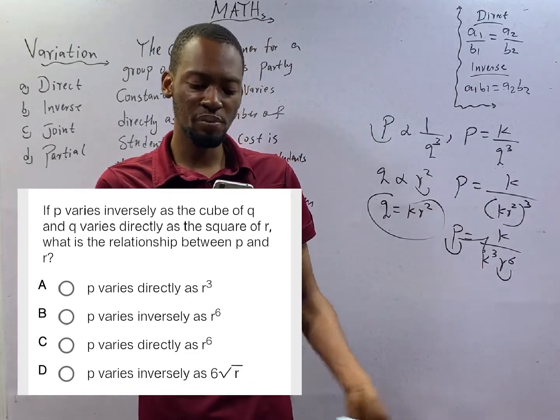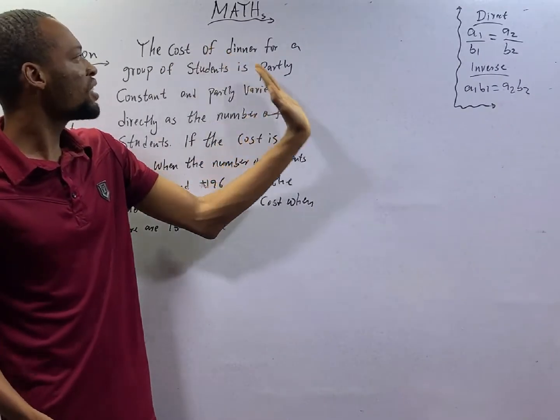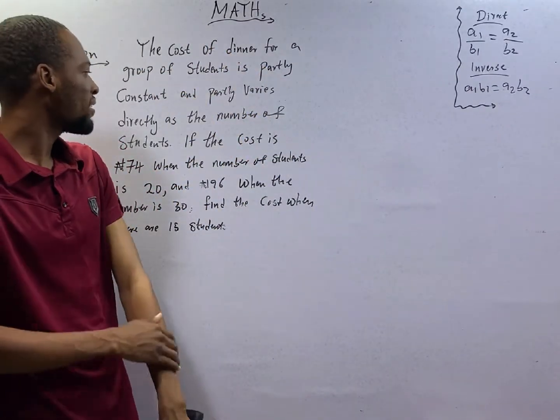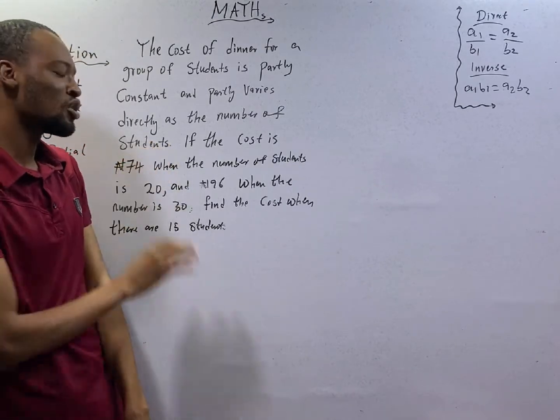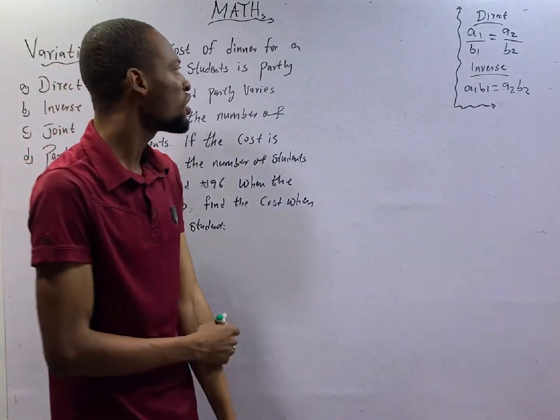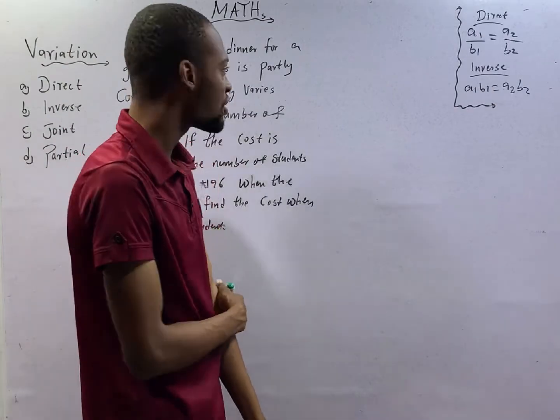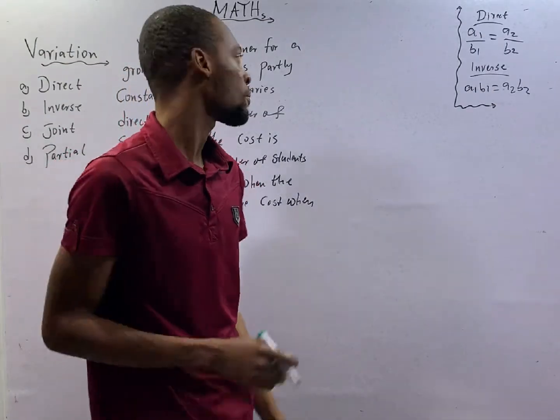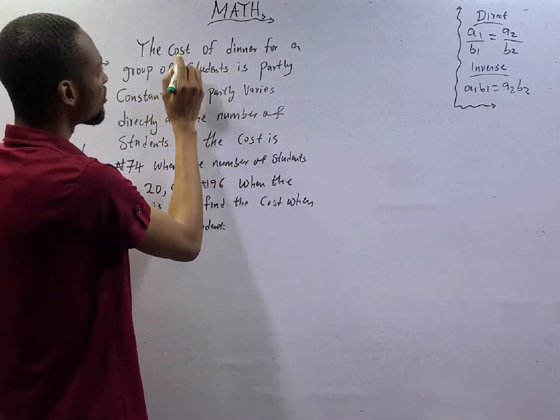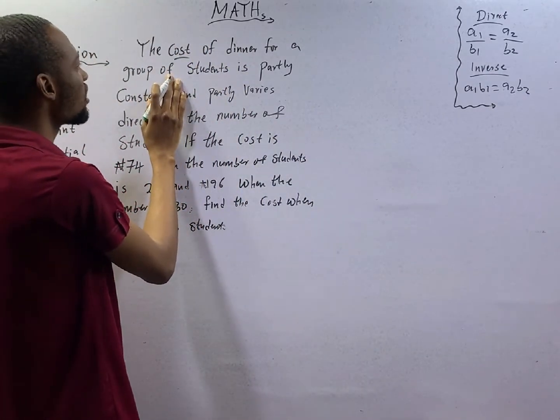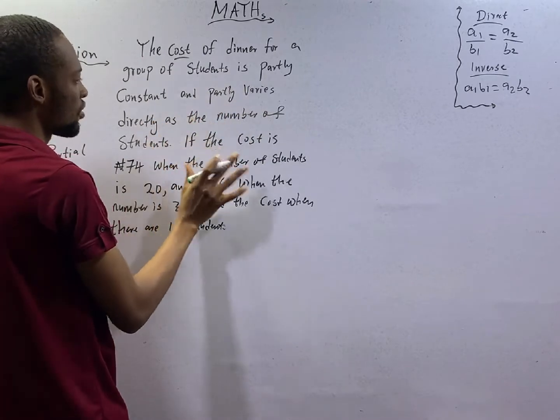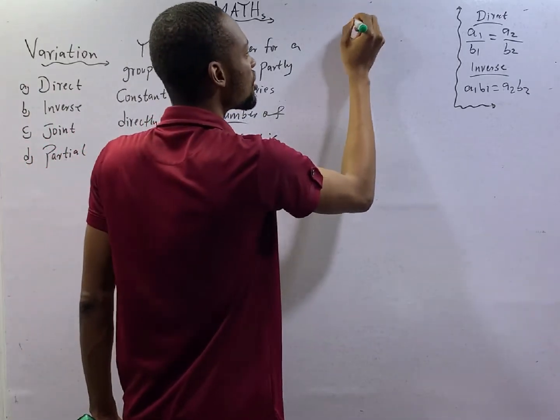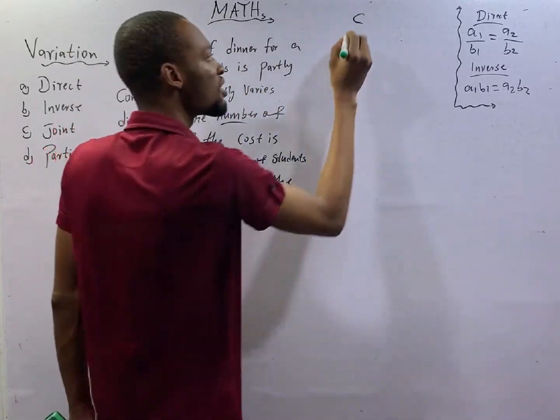The cost of dinner for a group of students is partly constant and partly varies directly as the number of students. When you hear partly constant, this is partial variation like I explained earlier. So we are dealing with cost of dinner and the number of students. So let's call cost C and the number of students N.